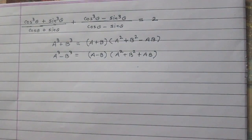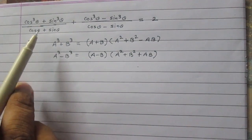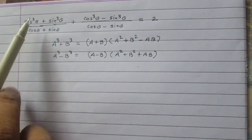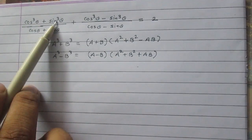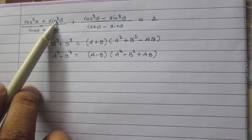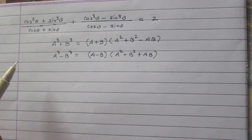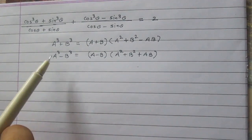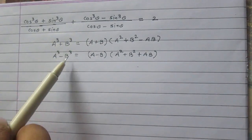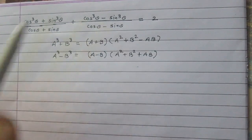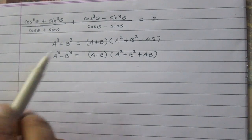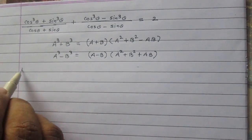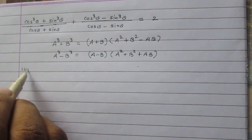In the first part we can apply the first identity, where a stands for cos theta and b stands for sine theta. In the second part, the second identity can be used, where a is cos theta and b is sine theta. After using these two identities, the left hand side will be transformed.